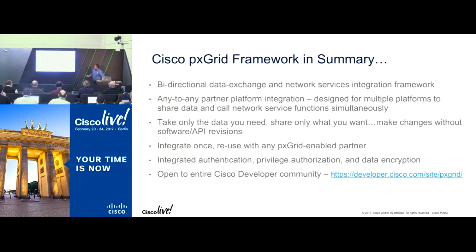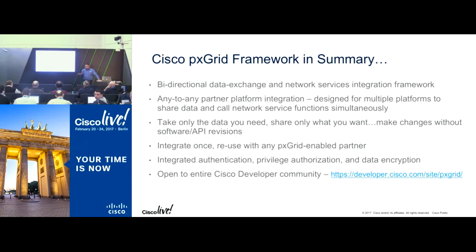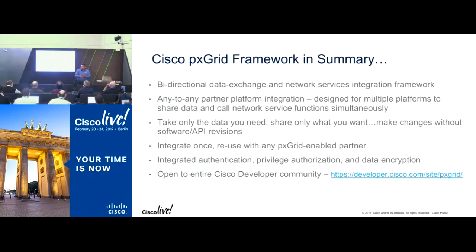In summary, the PX Grid framework is bidirectional — it's not only ISE publishing to the grid; partners can publish and share as well. It's an any-to-any platform integration. The SDK client we give to partners is available in two flavors — C and Java. That also means if you have a homegrown application in your environment, you can also adopt PX Grid. You can take our SDK through Cisco DevNet and use it to do an integration with your own product, as long as your platform is compatible with C or Java.